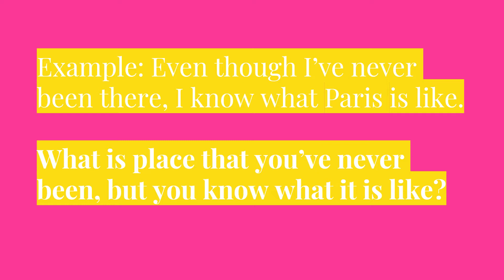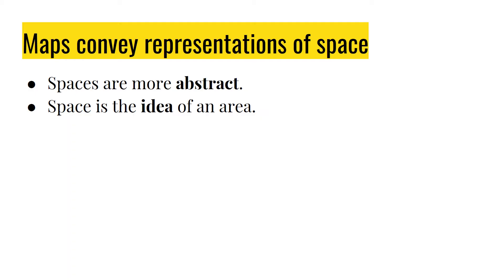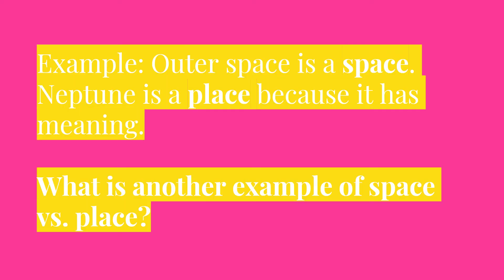Places are material — historians study the history of Paris and other parts of France, for example. So what is a place that you've never been, but you know what it's like? Maps also convey representations of space. Spaces are more abstract than places; places are more tangible and material. Space is the idea of an area. For example, outer space is a space, and Neptune is a place in outer space — Neptune is a place because it has meaning, it is tangible and concrete.